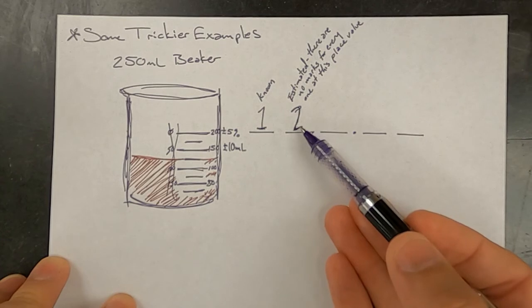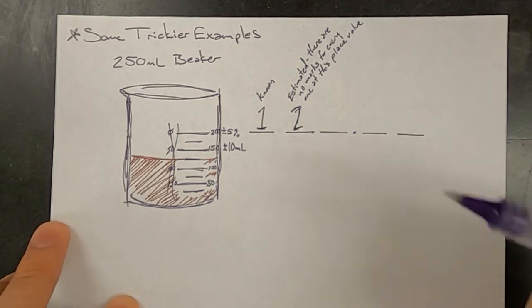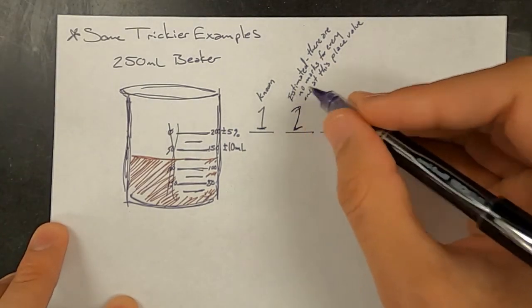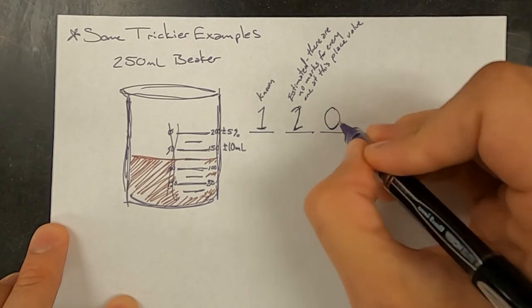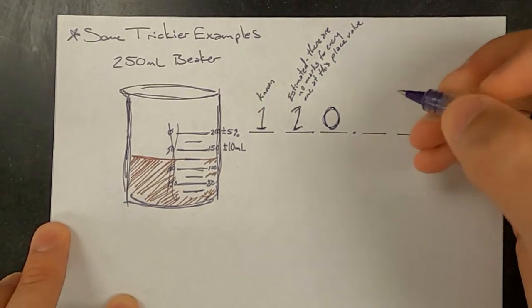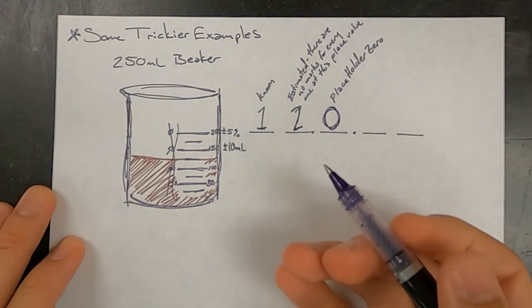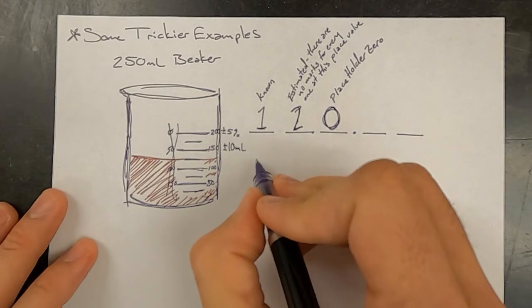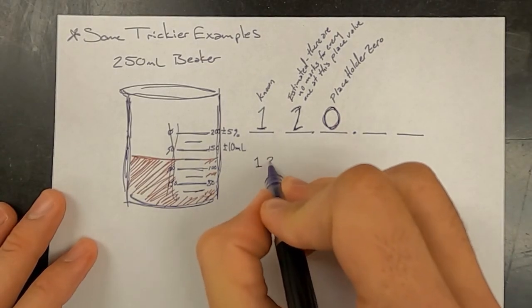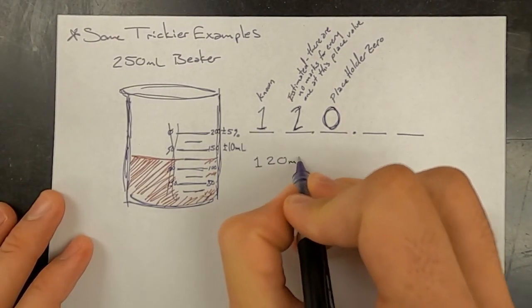Now we can't just say that it's 12 milliliters. We do need to do something. And so we have to put in not another estimated digit, but a placeholder, a zero as a placeholder. And so when we would write this measurement out, we would have to write 120 milliliters.